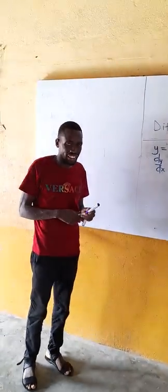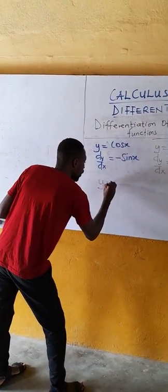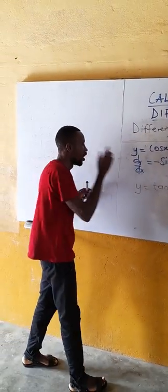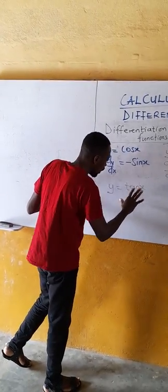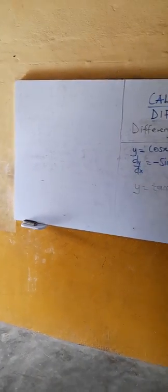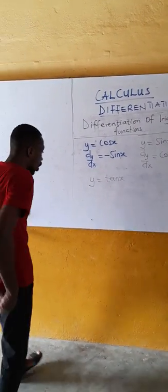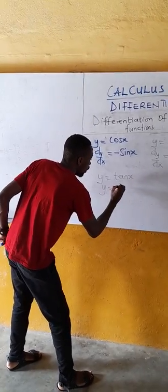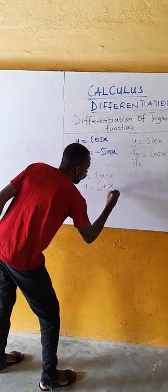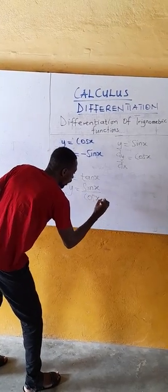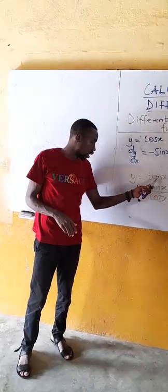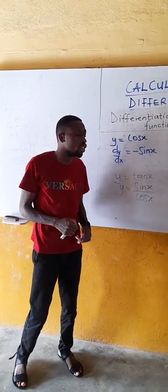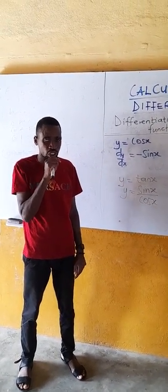Now let's try to differentiate tan x. If y equals tan x, there is no need to memorize this — if you know the differential of cos and the differential of sin, this will not be a problem. Remember, tan x equals sin x over cos x. Since this is a fraction, we use the quotient rule to differentiate. I have a video on quotient rule — please check it on my YouTube channel.